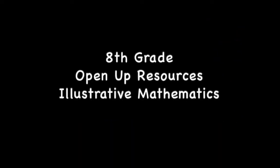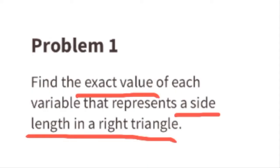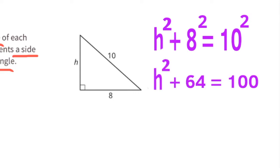Eighth grade Open Up Resources Illustrative Mathematics, Unit 8, Lesson 8: Finding Unknown Side Lengths. Problem number one — find the exact value of each variable that represents a side length in a right triangle. Remember, a² + b² = c². We can use h² + 8² = 10².